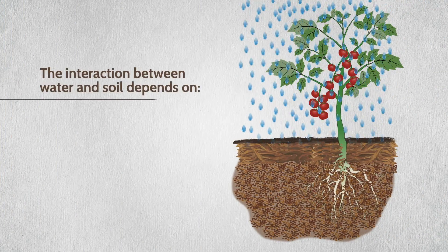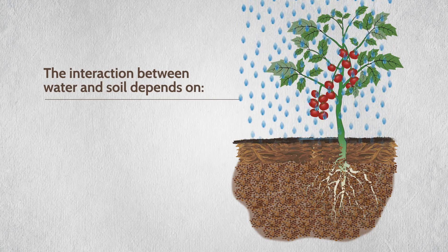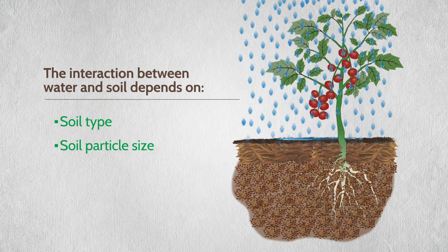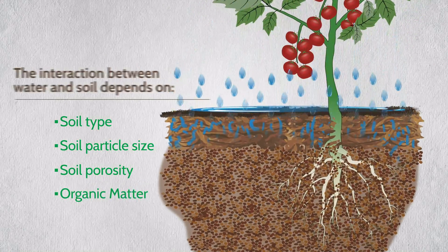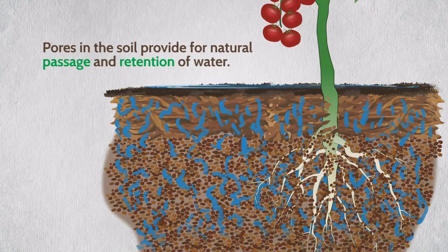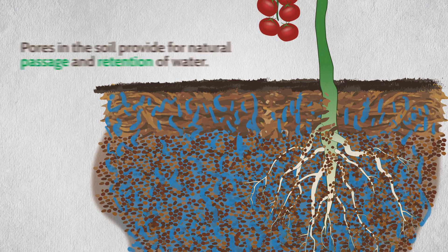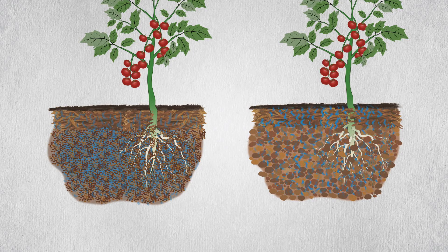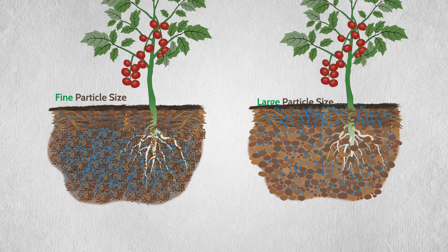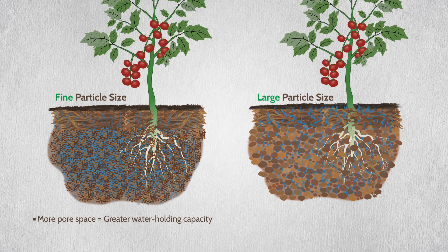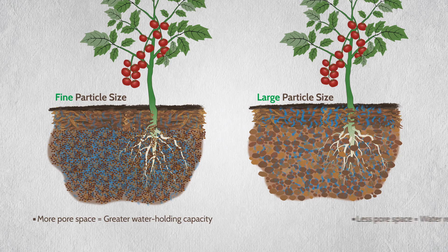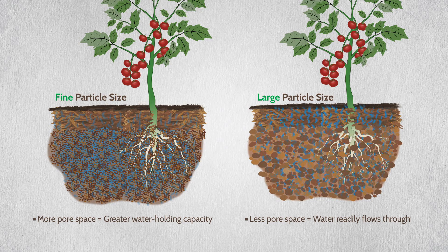The interaction between water and soil depends on factors such as soil type, soil particle size, soil porosity, and organic matter. Pores in the soil provide for the natural passage and retention of water within the plant root zone. A soil's ability to retain water is related to particle size and organic matter. Soils with fine particle size such as clay have more pore space and greater water holding capacity, while coarse soils with larger particle size such as sand have less pore space, so water readily moves through it.